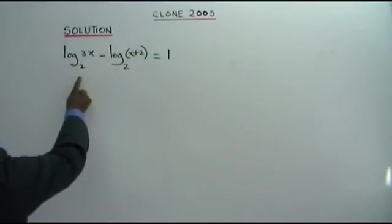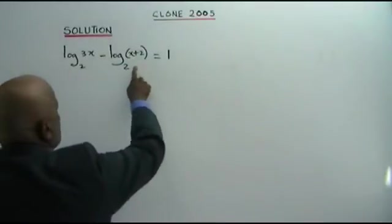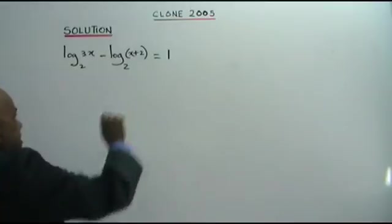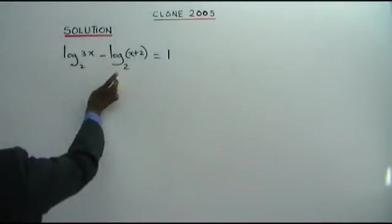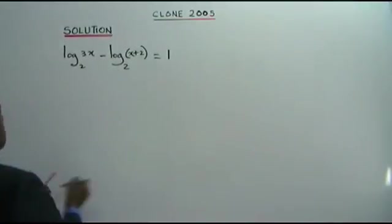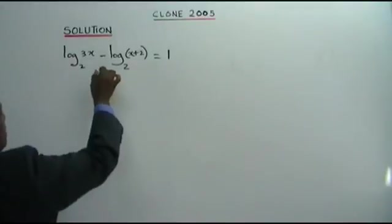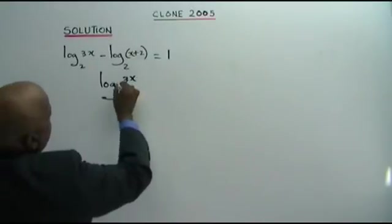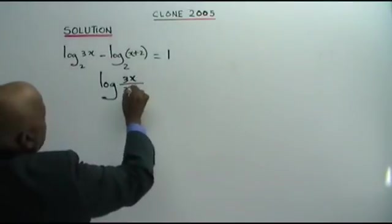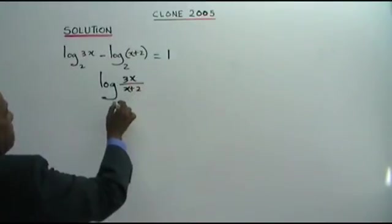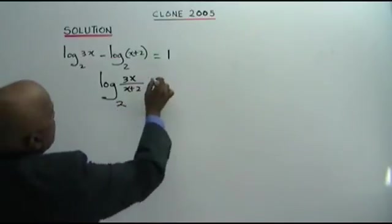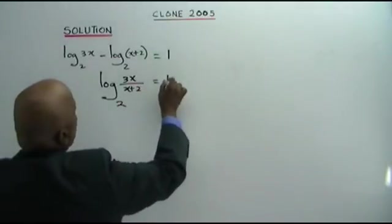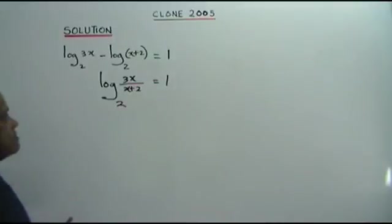Log 3x base 2 minus log x plus 2 base 2 equals to 1. Now we make this into a single log first. So this is log 3x divided by x plus 2, base 2, equals to 1.